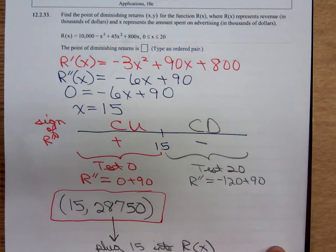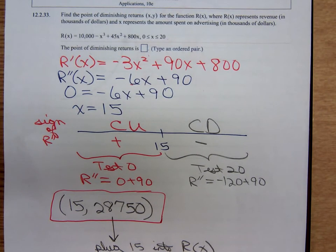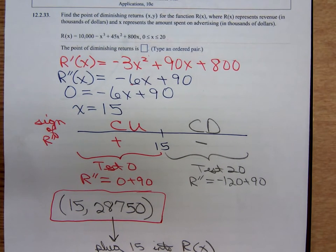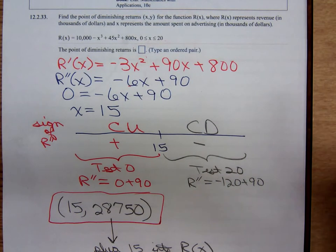So, hopefully this has helped y'all. Those of you that weren't in class and missed my discussion on this. Maybe this will help you better understand what's happening with concavity, the second derivative, and the point of diminishing returns. Bye-bye.